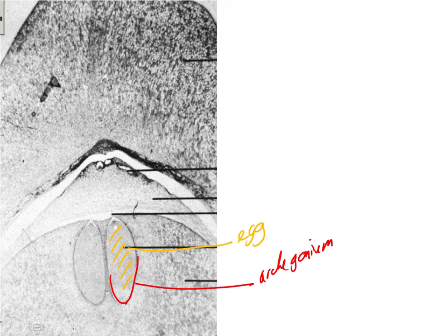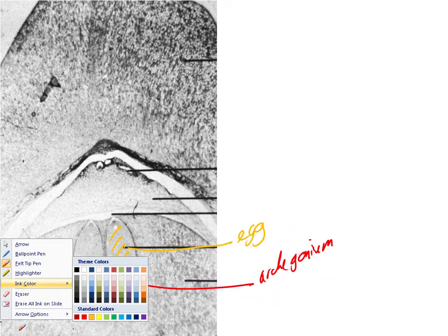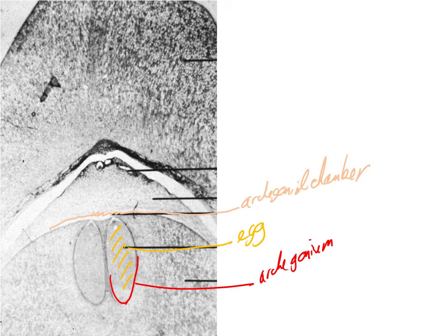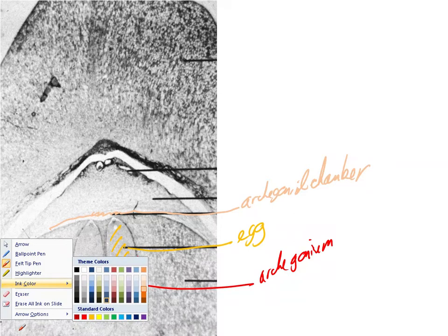The chamber above that is our archegonial chamber. Outside the archegonial chamber we have the megasporangium. In this earlier stage of development the megasporangium is a little less well developed.